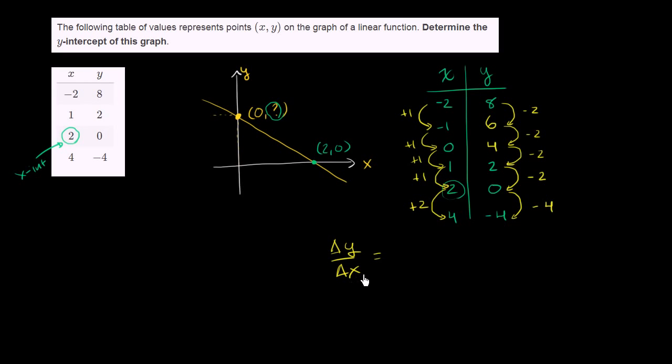When x increases by 1, y decreases by 2. When x increases by 2, y decreases by 4. Either way you think about it, your change in y for unit change in x is going to be equal to negative 2.